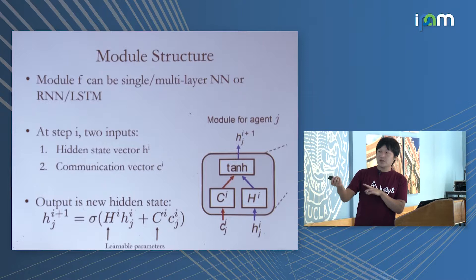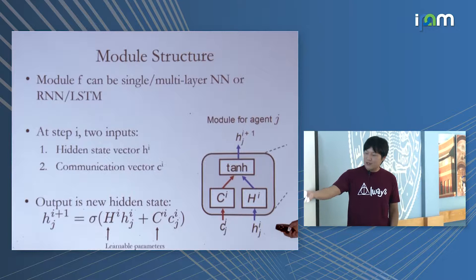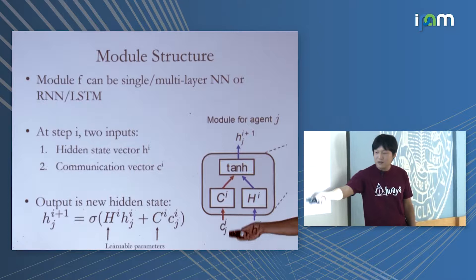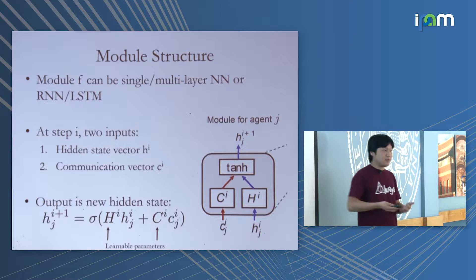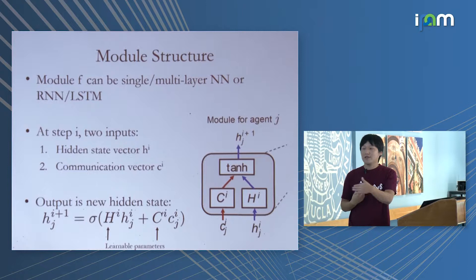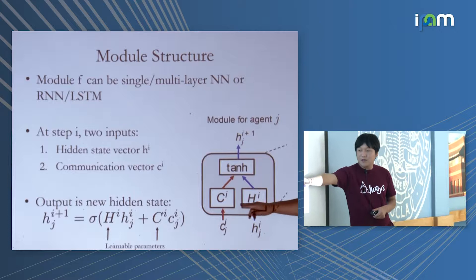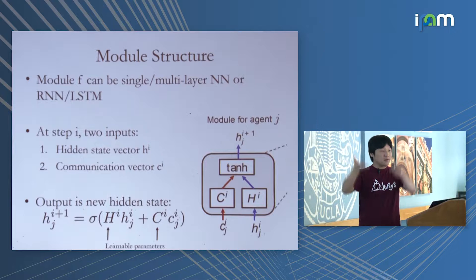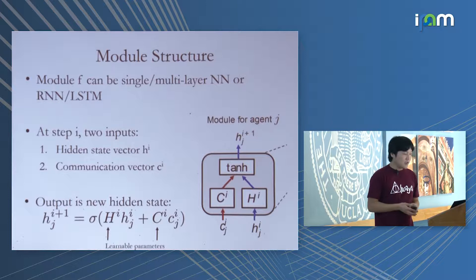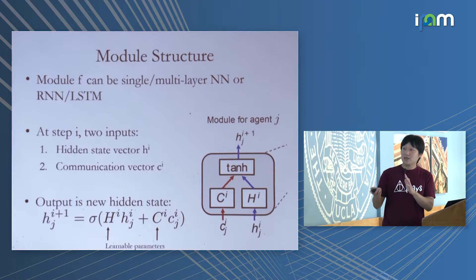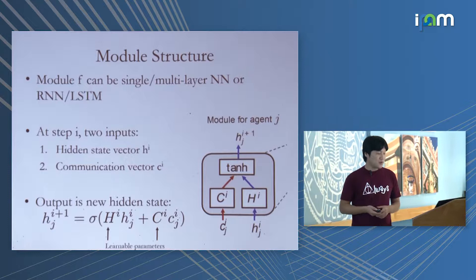Each block takes the element's previous representation and the incoming communication vector, multiplies them, passes each through a linear transformation, adds them together, and applies a non-linearity. If the weight matrices are shared across layers, you get a recurrent version; if they're different, you get a feedforward network with many parameters. So we can have an LSTM version or a feedforward version, which we compare later on tasks.